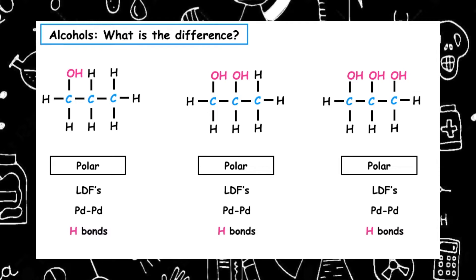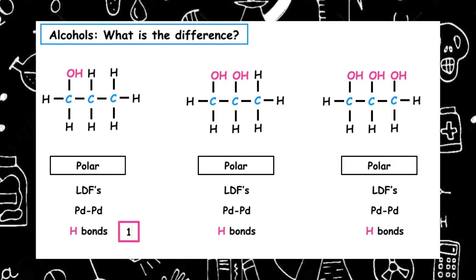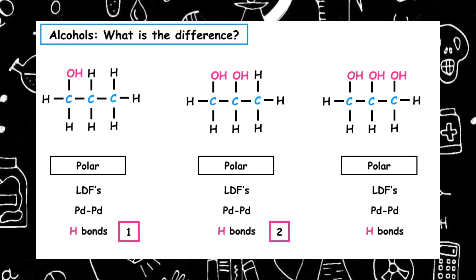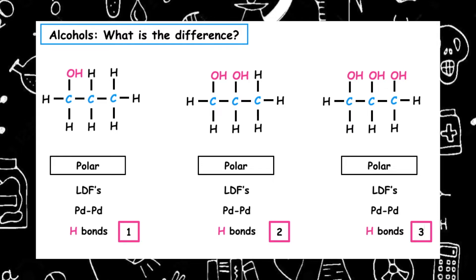However, what's different is the number of hydrogen bonds, as they have different numbers of hydroxyl groups. If you've got one hydroxyl group, it can exhibit one hydrogen bond; two hydroxyl groups means two hydrogen bonds; and three hydroxyl groups means that it can give off three hydrogen bonds.